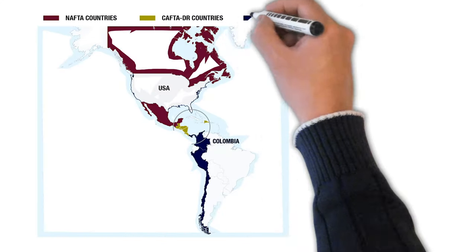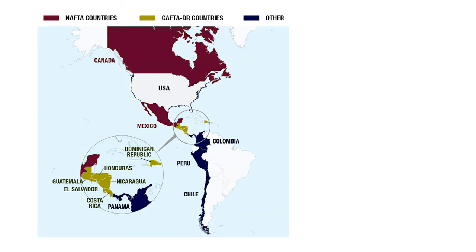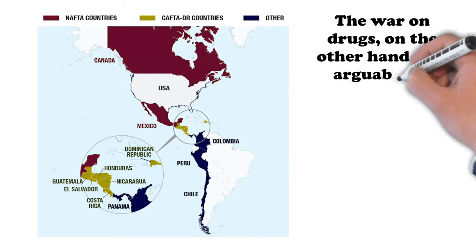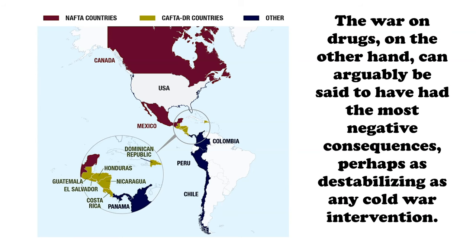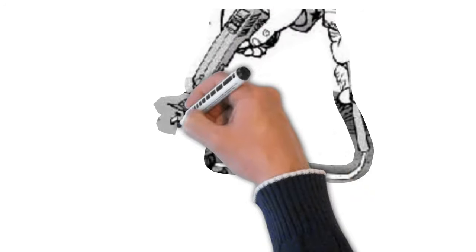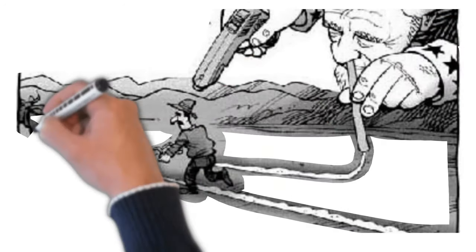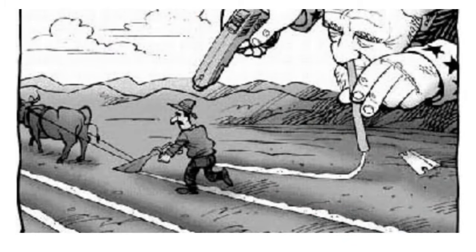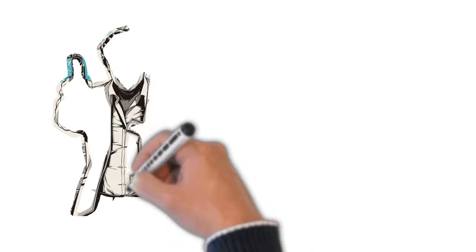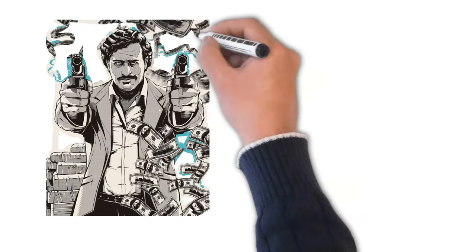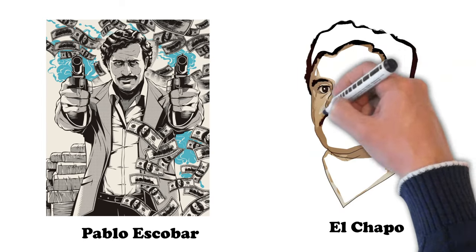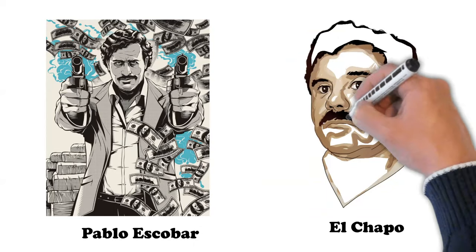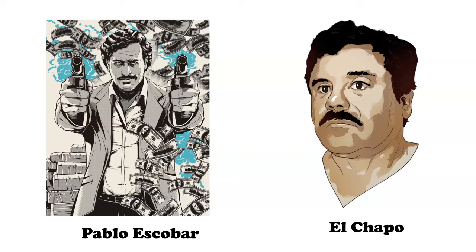Since then, the U.S. has signed free trade agreements with Colombia, Peru, and Chile. The war on drugs, on the other hand, has arguably had the most negative consequences — perhaps as destabilizing as any Cold War intervention. It has not only brought violence and crime from Rio to Tijuana, but also compelled countries to spend resources attacking poor peasants, from the cocaleros in Bolivia to people caught between guerrillas and the government in Colombia. Even as drug kingpins from Pablo Escobar to El Chapo were removed or imprisoned, it has had zero effect on the price or amount of drugs in the United States, and criminal organizations are becoming more sophisticated and diversifying into other activities.